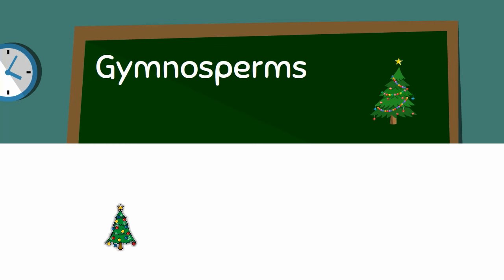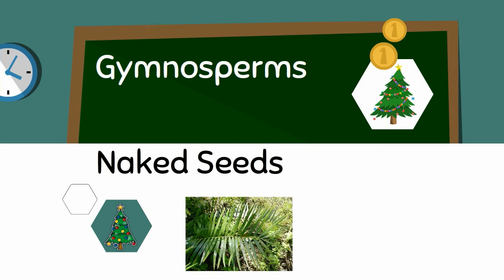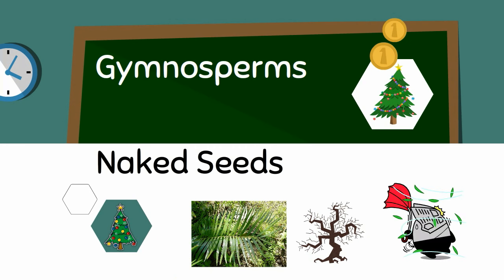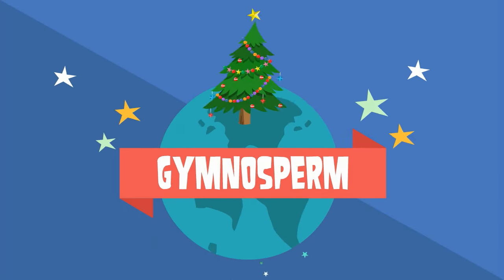Gymnosperms on the other hand are plants that have a naked seed. In other words, it is not enclosed in a protective enclosure. Many Gymnosperms have needle-like or scale-like leaves and deep growing roots. Many Gymnosperms have their seeds dispersed by the wind. The seed will land and then develop into seedlings and eventually a tree.